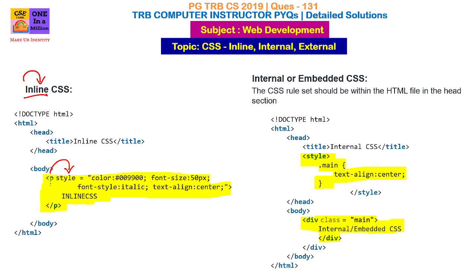If there is a paragraph element, we define style with color, font size, font style, and text properties. This is inline CSS — the style is defined directly in the tag and applied in the text document. For example, italic style is set in the font size using inline CSS.